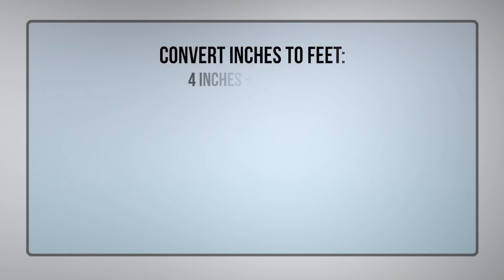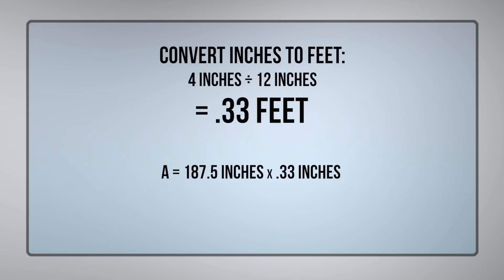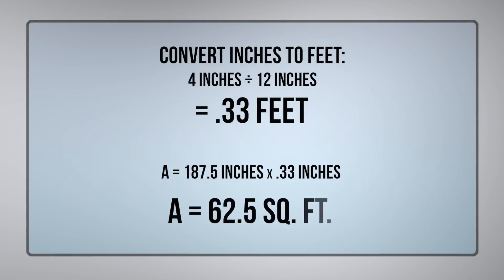To calculate how many tissue rolls we can make from one parent roll, we first need to calculate the square footage in each tissue roll. Let's start by converting inches to feet: we divide four inches by 12 inches, which gives us 0.33 feet. Next, we calculate the square footage of each toilet paper roll by multiplying its width, 0.33 feet, by its length, 187.5 feet. This gives us 62.5 square feet on every toilet paper roll.